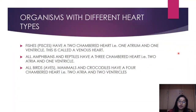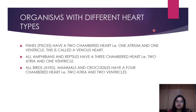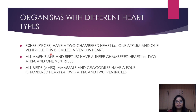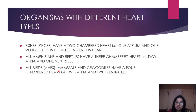Now let's discuss organisms with different heart types. In human beings we have four chambers — two atria and two ventricles — but it differs across organisms. Fishes have a two-chambered heart: one atrium and one ventricle, called a venous heart. All amphibians and most reptiles — with crocodiles as an exception — have a three-chambered heart: two atria and one ventricle. Birds, mammals, and crocodiles have a four-chambered heart: two atria and two ventricles.